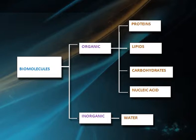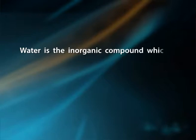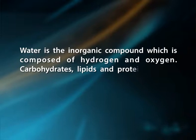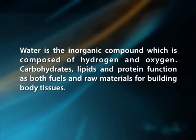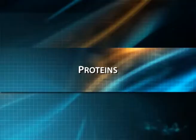The organic compounds present in the cell are proteins, lipids, carbohydrates, and nucleic acids. Water is an inorganic compound which is composed of hydrogen and oxygen. Carbohydrates, lipids, and proteins function as both fuels and raw materials for building body tissues. Let us discuss about the biomolecules one by one, beginning with protein and its structure.